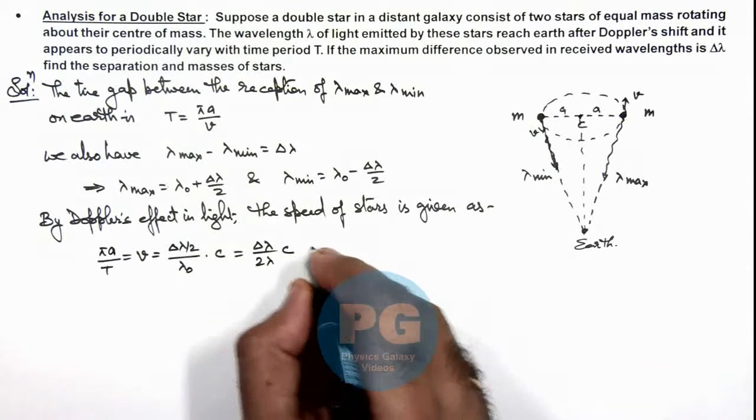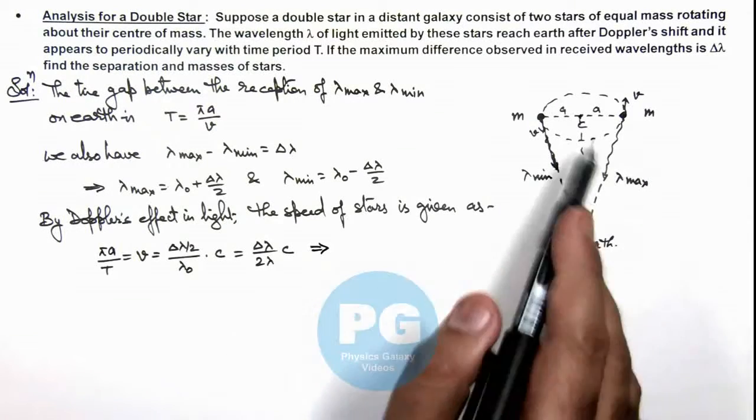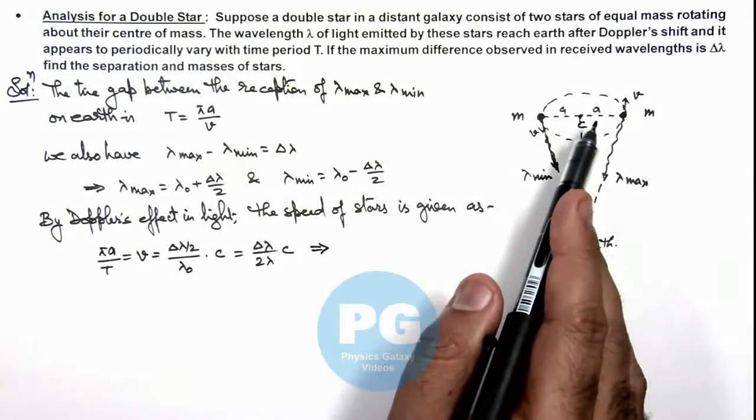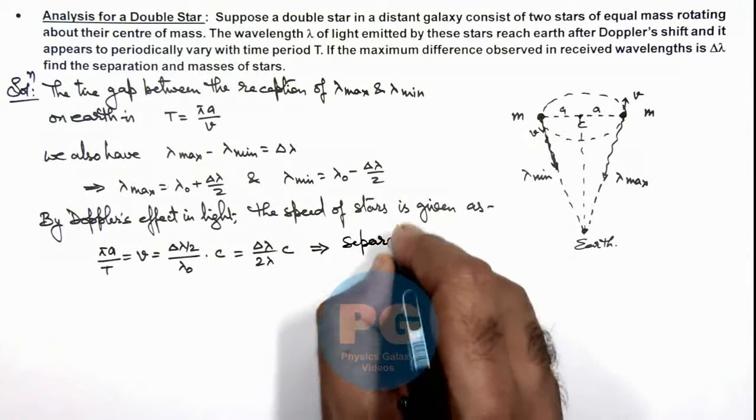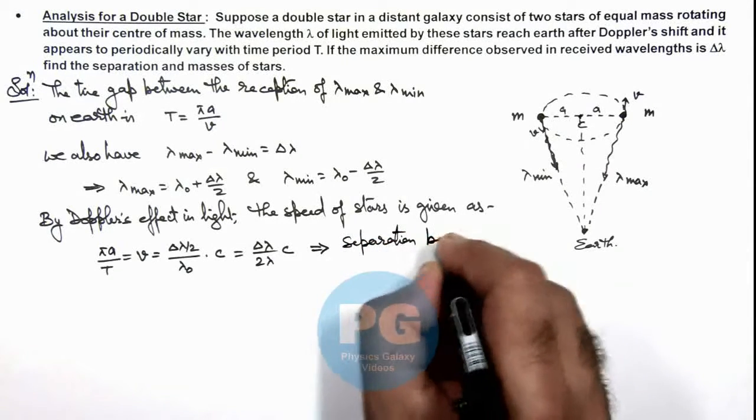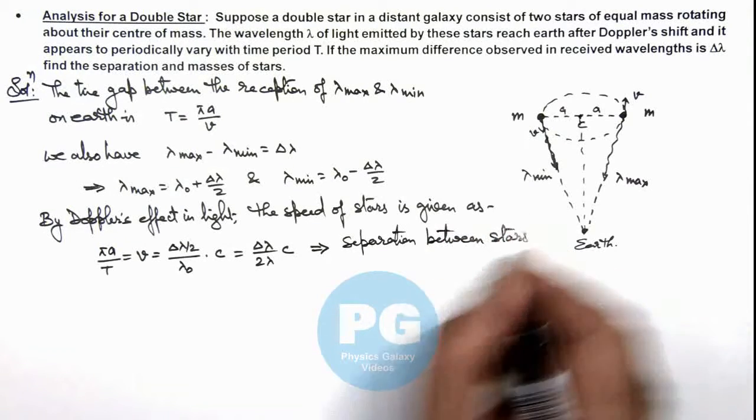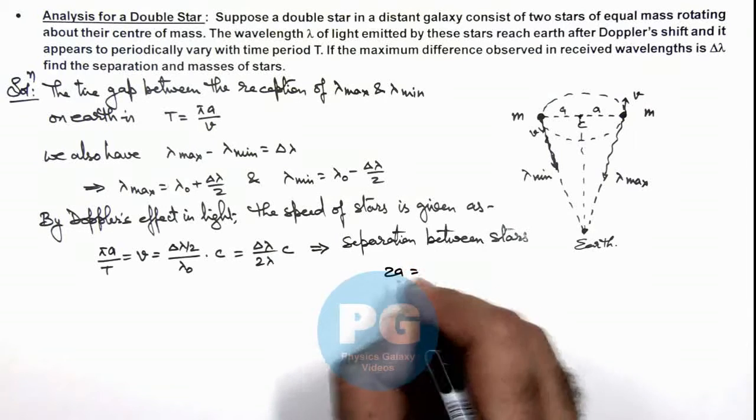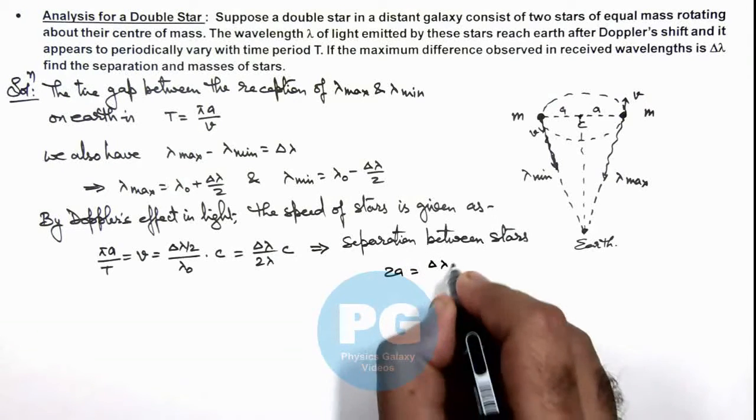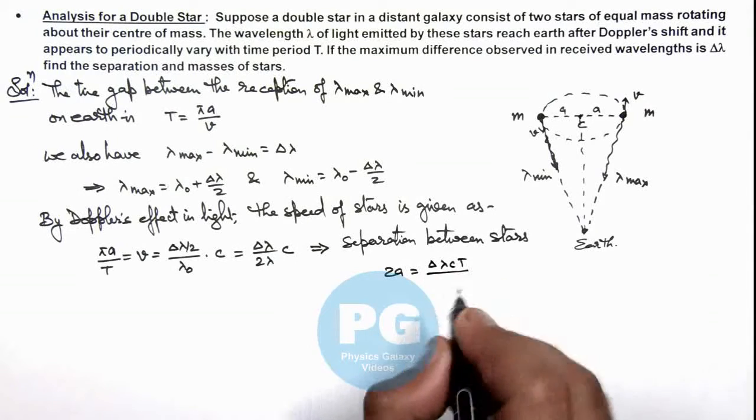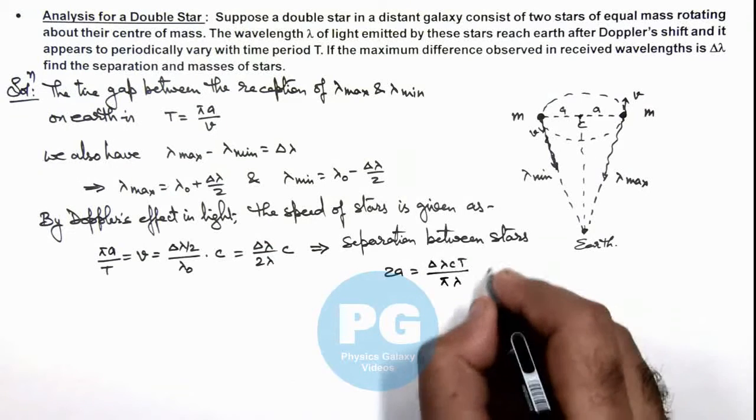So from this relation we can write the value of separation between the stars. If we calculate separation between stars, it can be given as 2a, and the value of 2a we are getting is ΔλcT divided by πλ. This is one result of this problem.